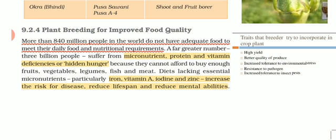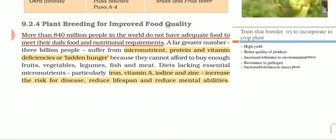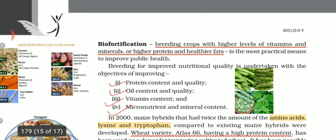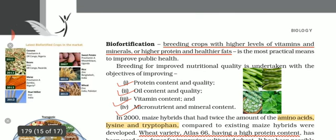Immunity gets slowed down and several mental conditions can arise — it can be dementia, it can be depression. There is more risk of infections in those people who are not taking a balanced diet. So, biofortification — scientists or breeders have incorporated higher levels of vitamins, minerals, proteins, and healthier fats.